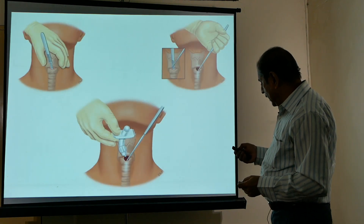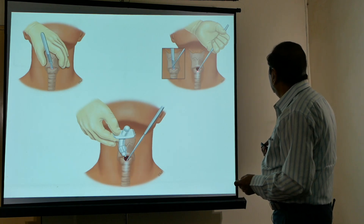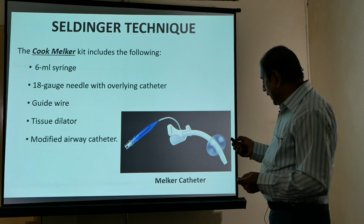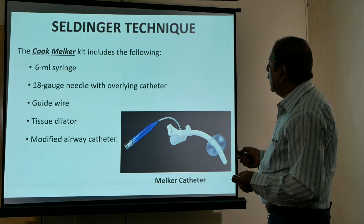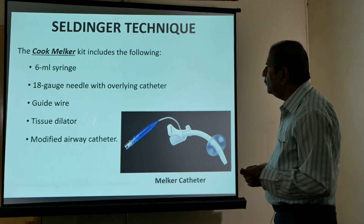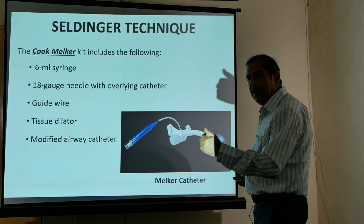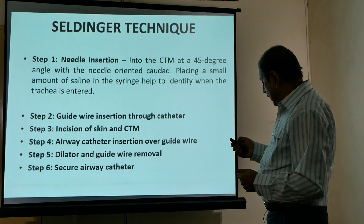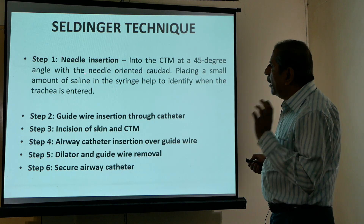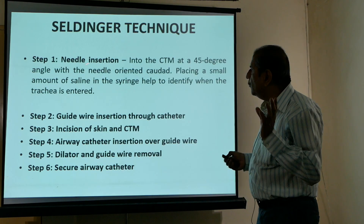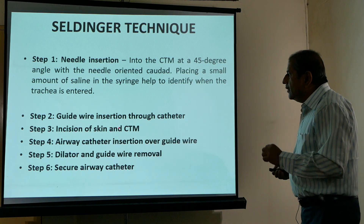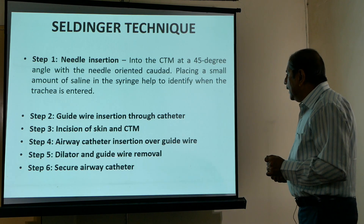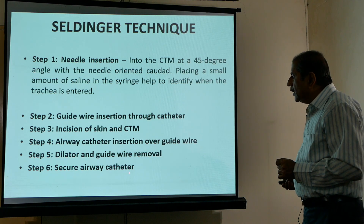A pictorial depiction shows the hook being applied to pull the cricoid downward, followed by insertion of the tracheostomy tube. The Seldinger technique uses kits such as the Cook-Melker kit, where all required equipment is packed in a sterilized pack. A 14-gauge needle is first inserted after identifying the cricothyroid membrane, then a guide wire is passed through it and an incision is made.